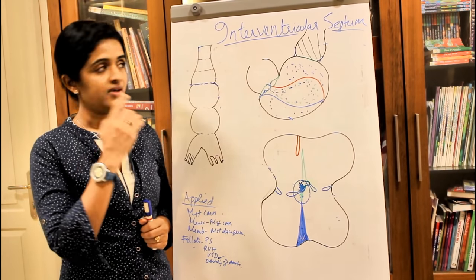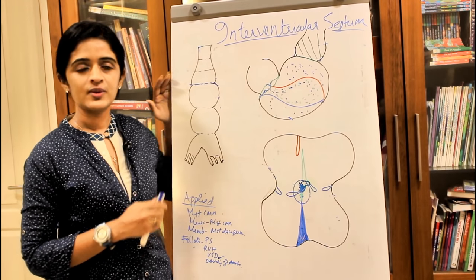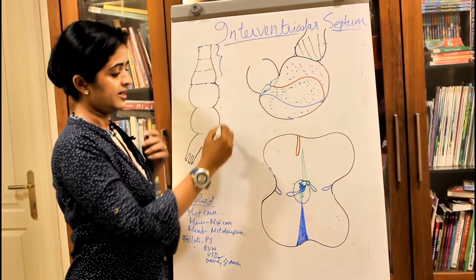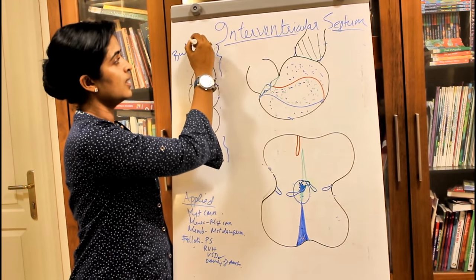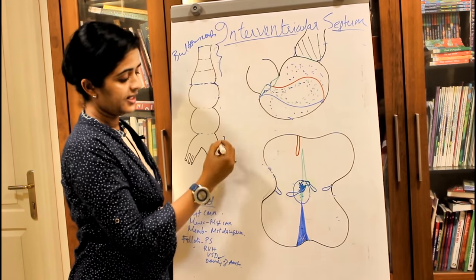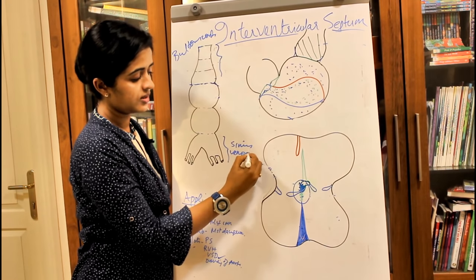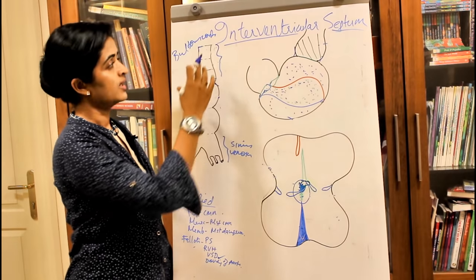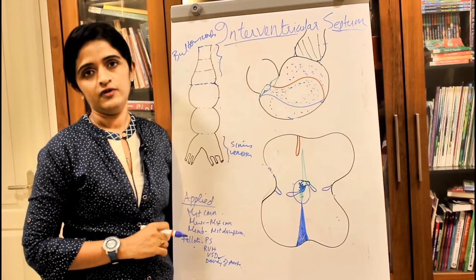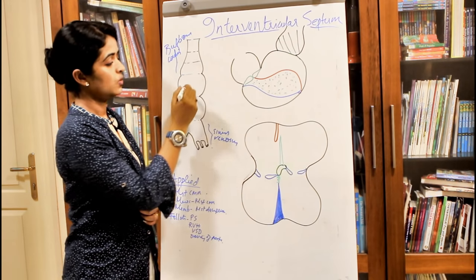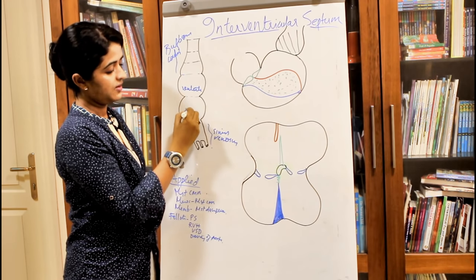I'd like to give an overview of the development of the heart tube in a nutshell. The heart tube has an arterial end and a venous end. The arterial end is known as the bulbus cordis and the venous end is known as the sinus venosus. After bulbus cordis we have the primitive ventricle, then the primitive atria.